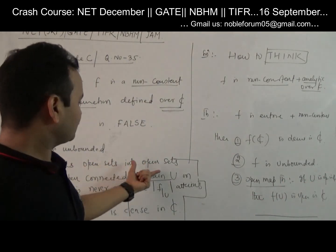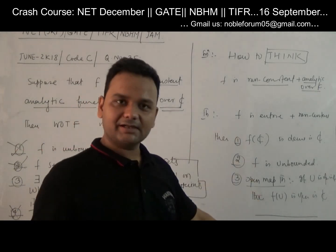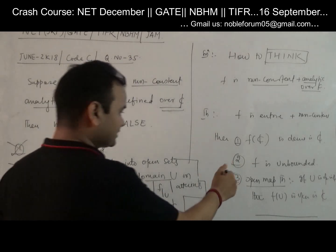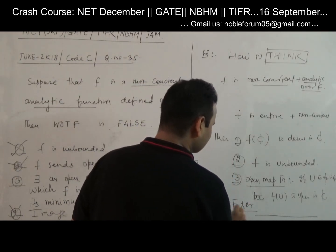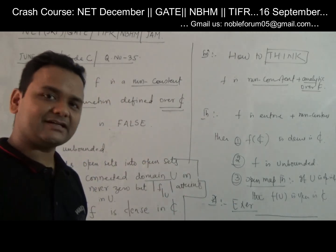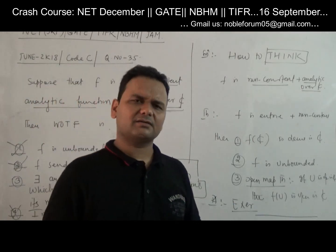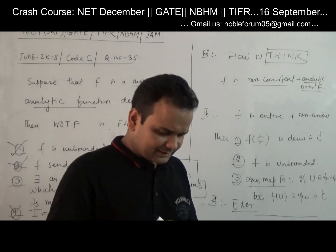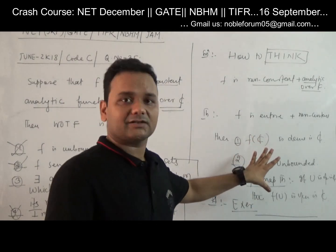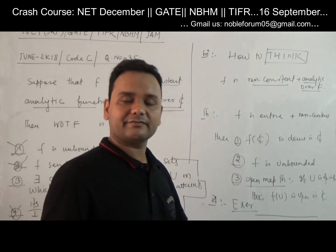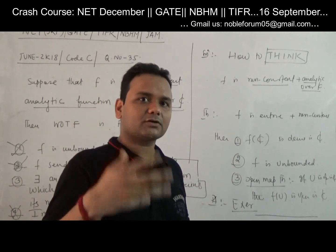So options 1 (A), 2 (C), and 4 (D) are all correct statements by known theorems. The proof of these I leave as an exercise — you can find them in any standard complex analysis textbook. If I give all the proofs, the video will become unnecessarily lengthy. But if you are not able to prove it, please write in the comments and I will make another video.